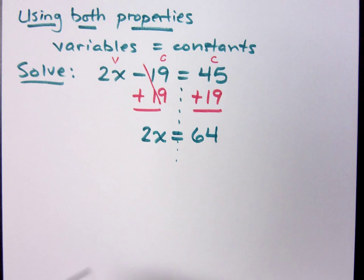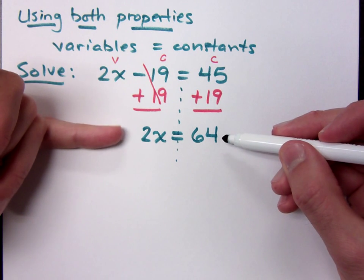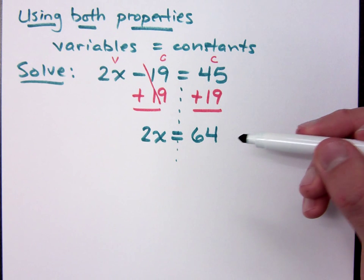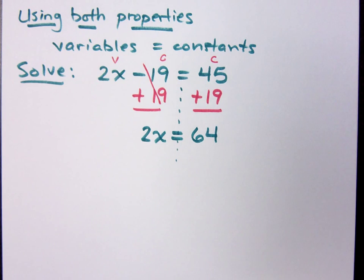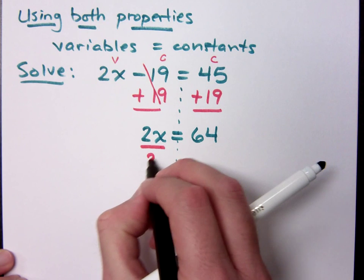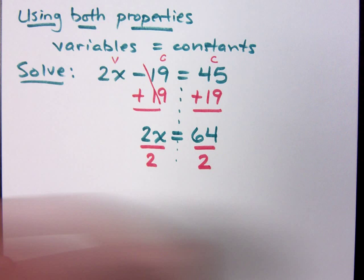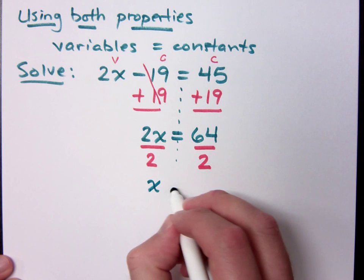Am I done? No — I'm going to divide by 2. What you see here is something just like a single-step problem. If I had given you 2x equals 64 before, you would just divide both sides by the coefficient, which is 2. So what does x equal? x equals 32.